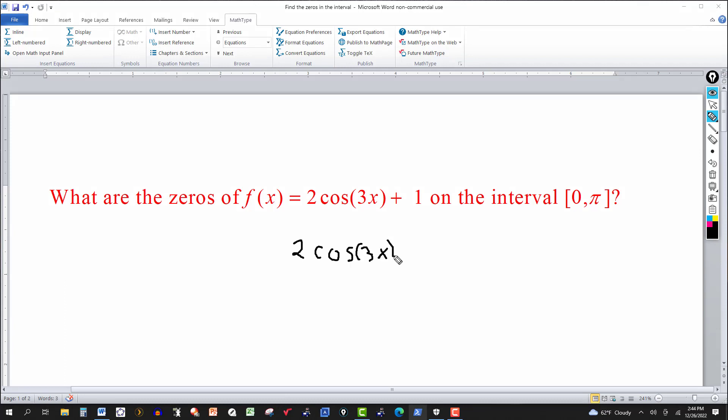That's 2 cosine of 3x plus 1 equal to 0. So this problem is just another way of stating that you want to solve an equation. So let's solve this for the cosine of 3x. I'll leave the parenthesis off here, but this is cosine of the 3x. So take the 1 over, or add negative 1 to both sides, and then divide by 2. So we get cosine of 3x is equal to negative 1 half.